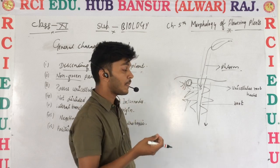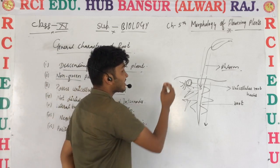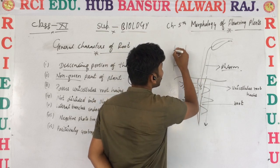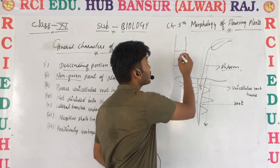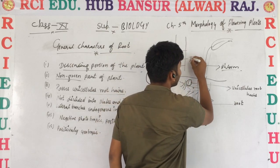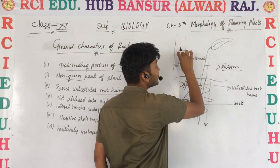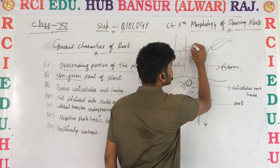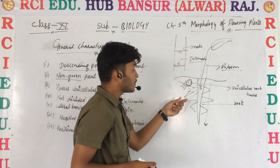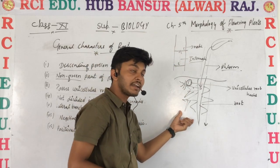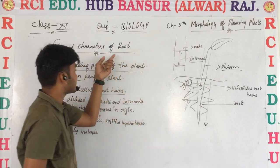Another important characteristic: roots are not divided into nodes and internodes. If you look at a stem, there are nodes, and the region between two nodes is called the internode. The stem is divided into nodes and internodes, but the root is not divided into nodes and internodes. That is also a very important characteristic feature of the root.